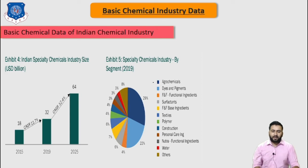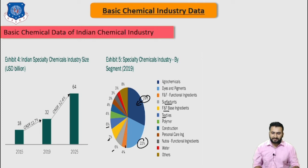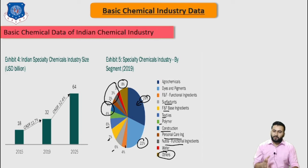Within India's specialty chemical segment: agrochemicals account for 29%, dyes and pigments 22%, flavor and fragrance ingredients 4%, surfactants 6%, FNF-based industries 7%, textile industry 6%, polymer and construction industries 4%, personal care ingredients, functional ingredients, and water treatment at 3% each, and other chemicals 8%. The specialty chemical sector is classified into organized and unorganized players, with 70% being unorganized players dominating the market.